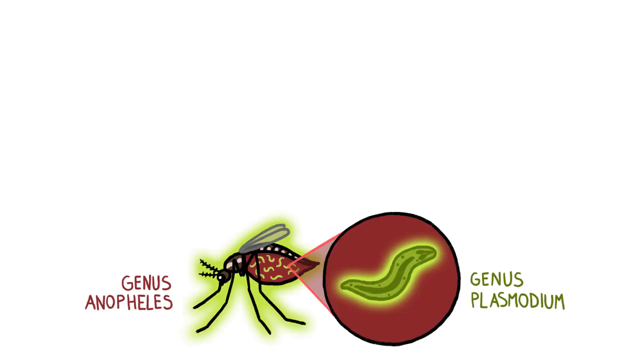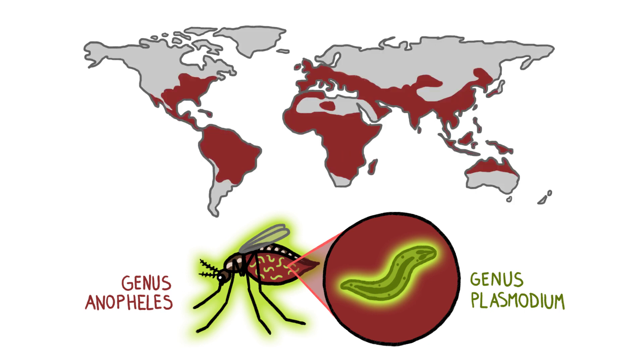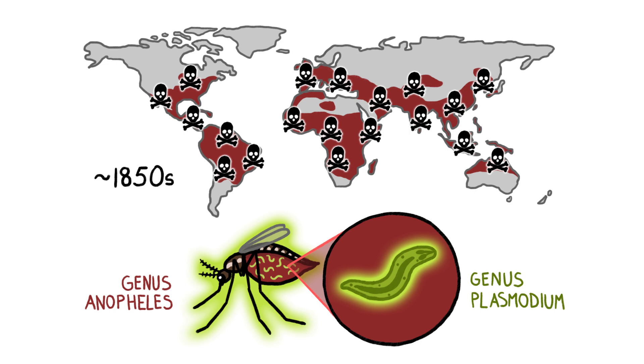But both the parasite that causes malaria and the mosquitoes that transmit it can survive over large swaths of the planet. And until recently, malaria regularly killed people all over the world.